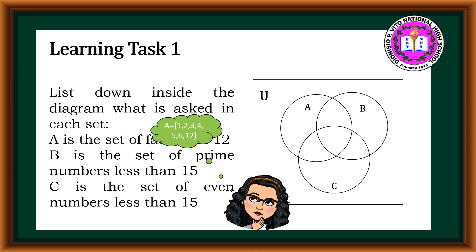Next, B is the set of prime numbers less than 15. A prime number is a natural number greater than 1 that is not a product of 2 smaller numbers. Therefore, the set of prime numbers less than 15 are 2, 3, 5, 7, 11, and 13.